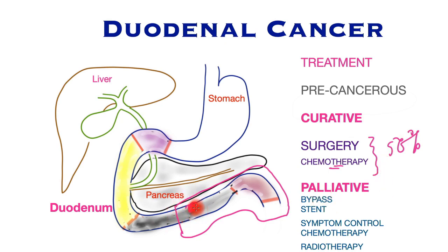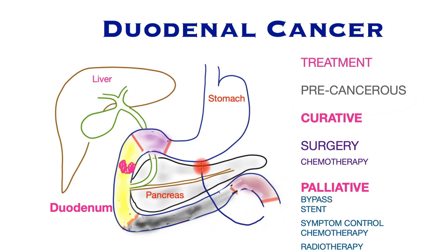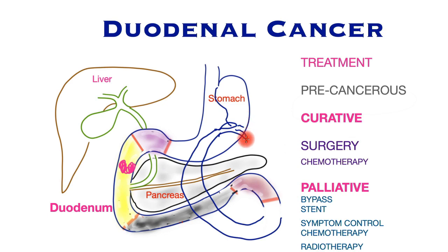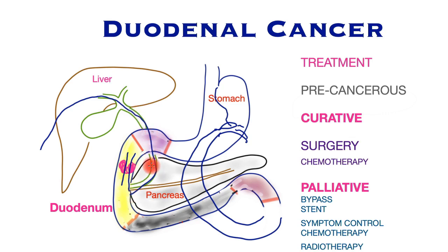However, if the tumour cannot be removed, symptoms have to be palliated — typically the obstruction of the duodenum or bowel. This may involve performing a bypass operation, bringing up a loop of bowel from downstream and connecting it to the stomach so that food can bypass the obstruction and enter the small bowel directly. If patients are not well enough for a bypass, a duodenal stent may be inserted — a mesh metal tube that goes through the obstruction, springs it open, and remains in place to allow the patient to eat. A similar metal stent can be inserted into the bile duct either by endoscope or through the skin, where a radiologist threads a wire and then a metal stent to allow the bile duct to open up. Palliative chemotherapy or radiotherapy for pain and bleeding may sometimes also be utilised for control of symptoms.